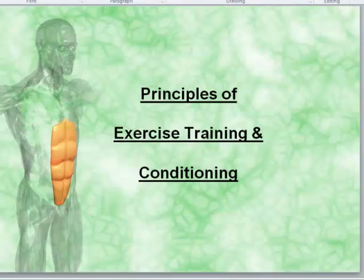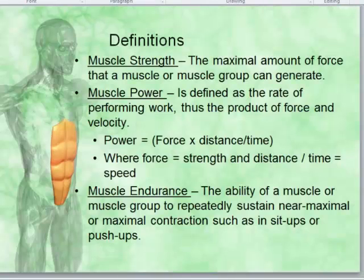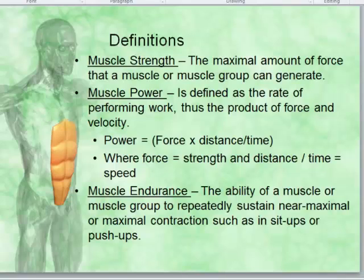Let's go through some definitions. In exercise physiology, we talk about muscle strength, muscle power, and muscle endurance. Muscle strength is the maximum amount of force that a muscle or muscle group can generate — a maximum contraction. People often assess this using one rep maxes, putting the maximum weight on a bench press and lifting it once. There are also 3-rep max and 5-rep max tests, but they're all assessments of muscle strength.